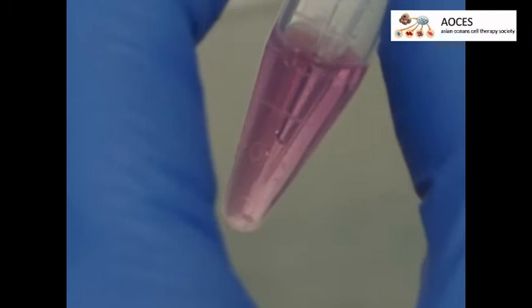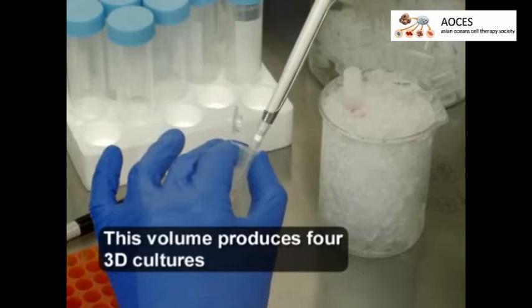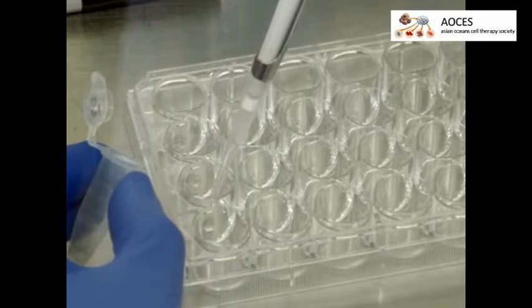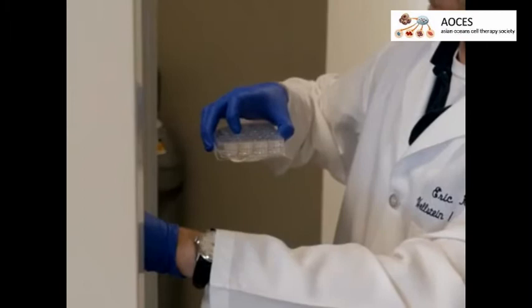Pipette 40 microliters of cancer cell spheroids from the bottom of the 1.5 milliliter centrifuge tube and combine with the ECM mixture. Now, pipette 40 microliters drops of this viscous mixture into the center of individual wells in a 24-well cell culture plate.